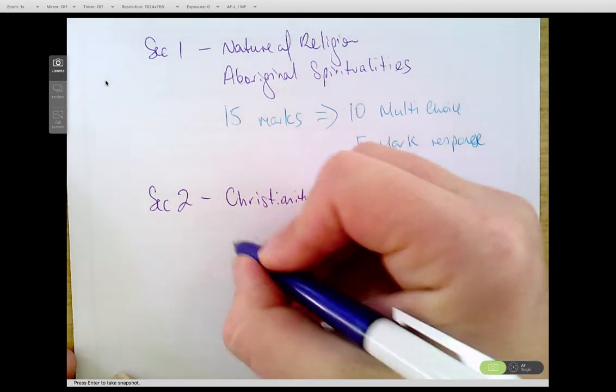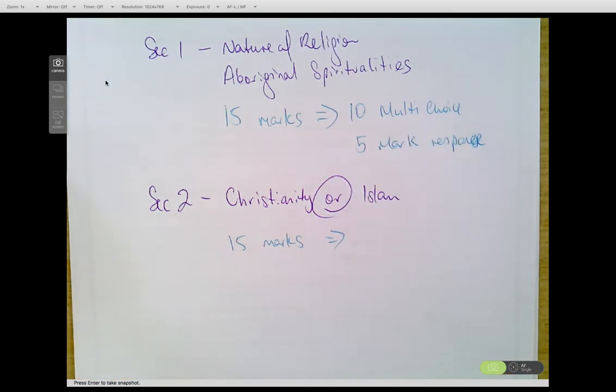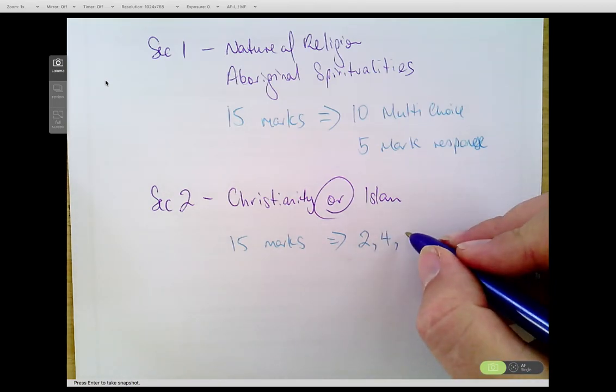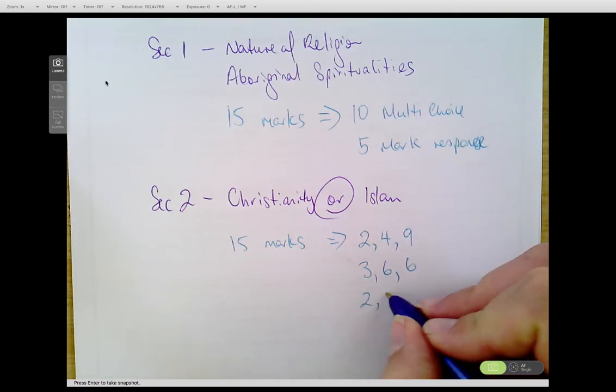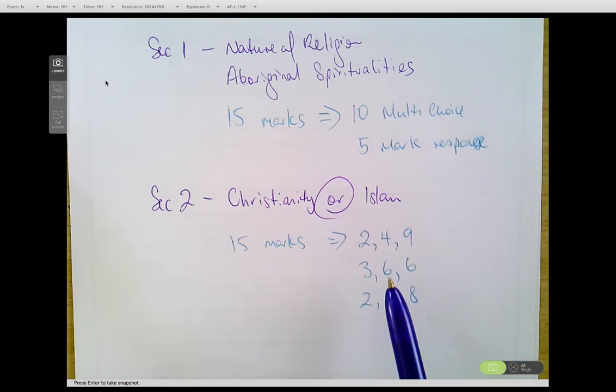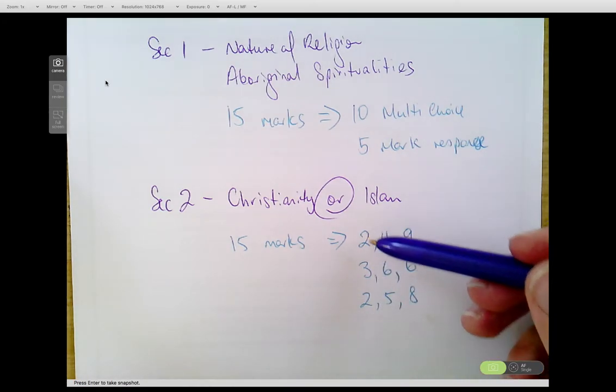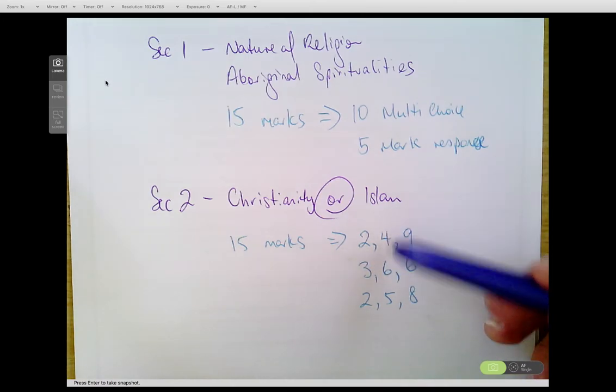So Section 2 is on Christianity or Islam. It's worth 15 marks as well. However, there's no multiple choice in this section. It's simply broken up into any combination worth 15 marks divided into three. So it could be a 2, 4, and 9; 3, 6, 6; 2, 5, 8—any combination that adds up to 15 marks.